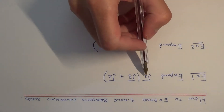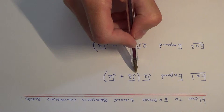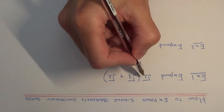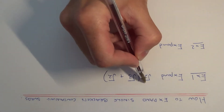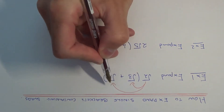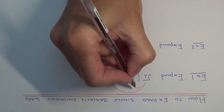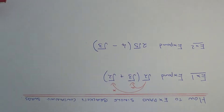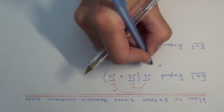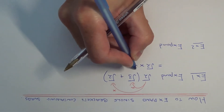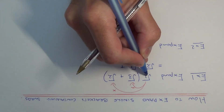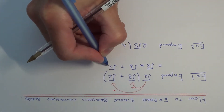So we need to expand the bracket: √2(√3 + √2). The √2 in front of the bracket needs to multiply the √3 and the √2. So on our next line we need to work out √2 times √3, and then the other one we need to work out is √2 times √2.